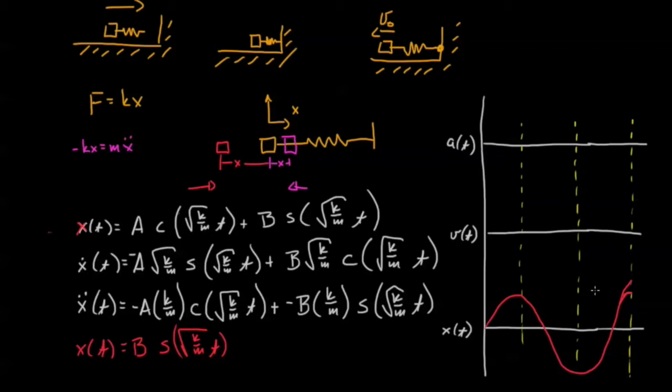Next we can look at our velocity at time equals zero. We know our velocity is b square root of k over m times the cosine of square root of k over mt, and of course if we wanted to we could also solve for exactly what b is by assuming that the initial velocity is v0.